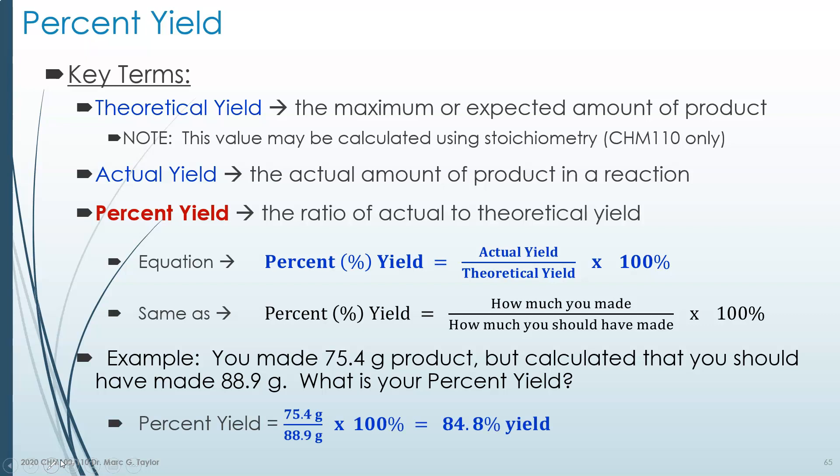Well, you take what you actually got divided by what you expected to get, and then multiply it by 100. You'll notice your unit is just percent, and we call that percent yield.